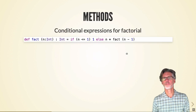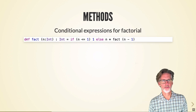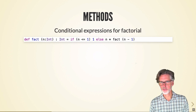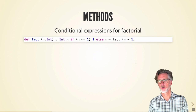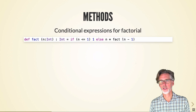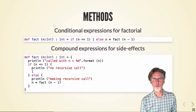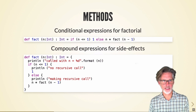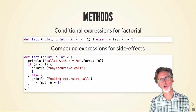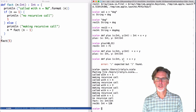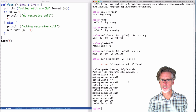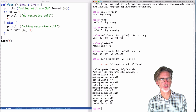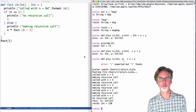Here's the factorial function written in Scala. I've defined factorial to take an integer and return an integer — if the integer is the base case I return 1, otherwise I return n times the result of the recursive call on n minus 1. This can also be written with compound expressions for side effects, printing out what's happening as we do the recursive calls. You can see it's called with 5, then recursively with 4, 3, 2, 1 down to no recursive call.